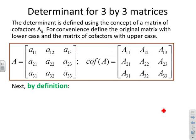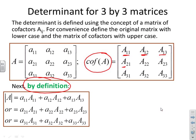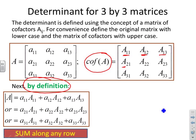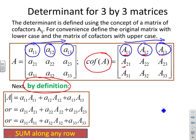Here's the determinant for a 3x3 matrix. The first thing we've done is introduce the concept of a matrix of cofactors. I've got a matrix A and I've set the cofactors of A, using uppercase to distinguish between the cofactors and the original elements — lowercase a for the original matrix, uppercase A for the cofactors. By definition, the determinant can be given by expanding along a row: take the first coefficient of the matrix A, multiply it by the first coefficient of the cofactor matrix, and do the same for the second and third coefficients on the top row.